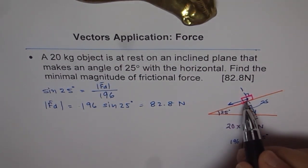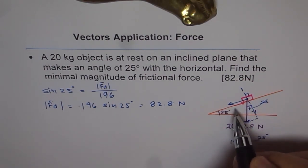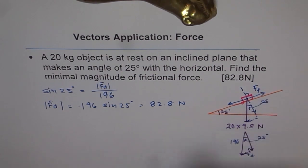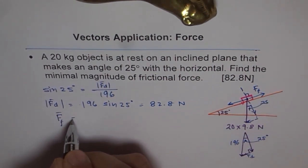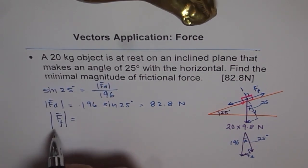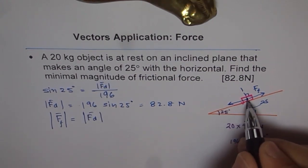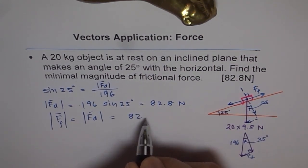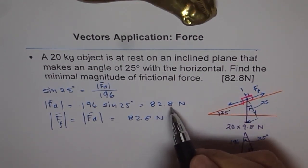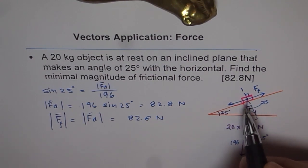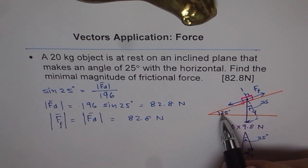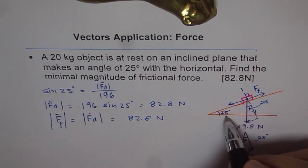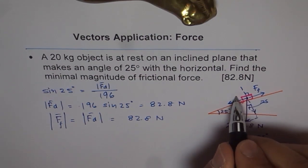Because of this 82.8 newton force along the slope, the object should slide. But it is not, since there is a frictional force acting in the opposite direction. The magnitude of the frictional force must equal the magnitude of the downward component — 82.8 newtons — to keep it in place. The downward force acts at 25 degrees, so the friction acts in the opposite direction at 25 degrees. That is how we solve this question.